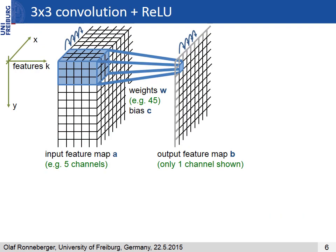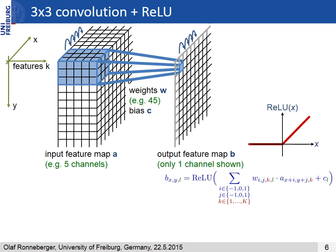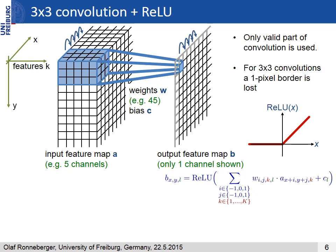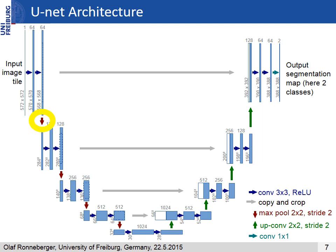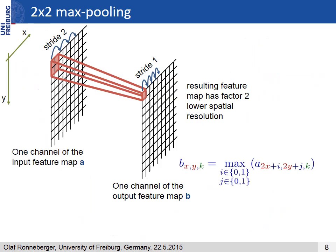In detail, it is a standard 3x3 convolution followed by a non-linear activation function. An important design choice is that we only use the valid part of the convolution, which means that for a 3x3 convolution a one-pixel border is lost. This allows us to later process large images in individual tiles. The next operation in the UNET is a max pooling operation, which reduces the xy size of the feature map. The max pooling operation acts on each channel separately, propagating the maximum activation from each 2x2 window to the next feature map.